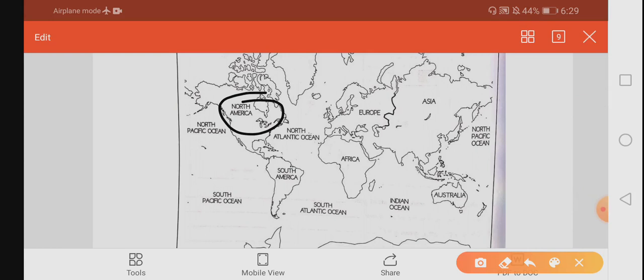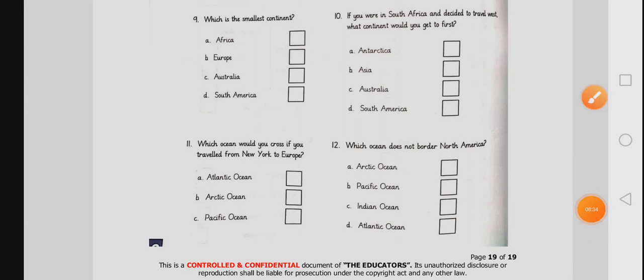And New York is the city in America. They are asking if you are traveling to Europe, which ocean will you cross? Here is Europe. Now, you have to travel from this point to this point. And this is the ocean that you will have to cross: North Atlantic Ocean. Here is the Atlantic Ocean.